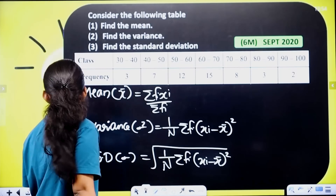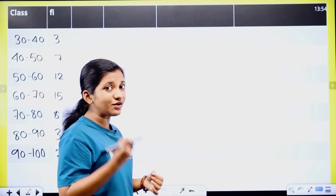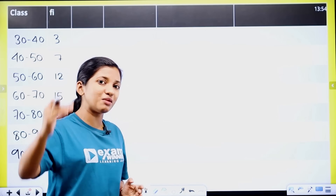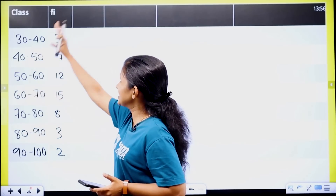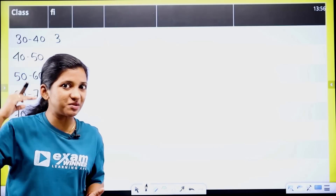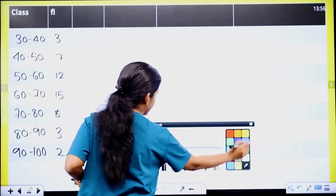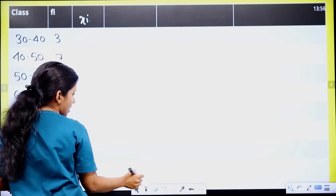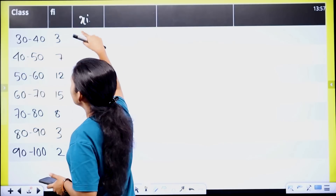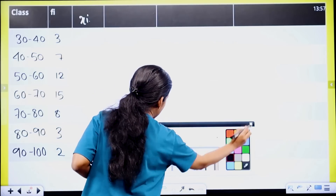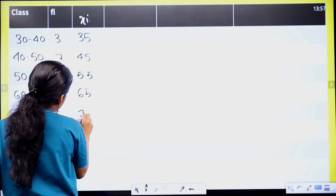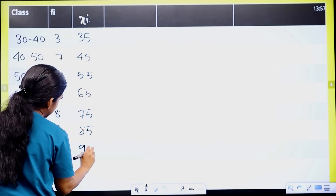Class and fi — class is the frequency. The mean equation is sigma fi xi divided by sigma fi. Next column, we have xi — class mark. Add class intervals: 30 plus 40 is 70, 70 by 2 equal to 35. So first xi is 35. Then 45, 55, 65, 75, 85, and 95.